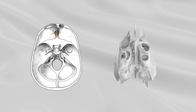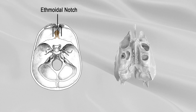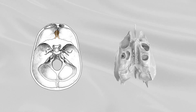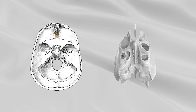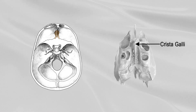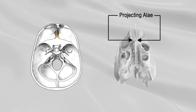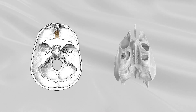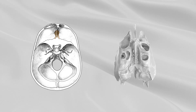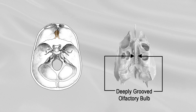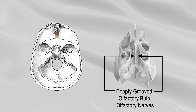Cribriform plate. The cribriform plate is received into the ethmoidal notch of the frontal bone and forms the roof of the nasal cavities. Projecting upward from the midline of this plate is a triangular process, the crista galli, with a long and thin posterior border. The short and thick anterior border of the crista galli presents two small projecting alae, which are received into corresponding depressions in the frontal bone and complete the foramen cecum. On either side of the crista galli, the cribriform plate is narrow and deeply grooved, supporting the olfactory bulb and perforated by foramina for the passage of the olfactory nerves.